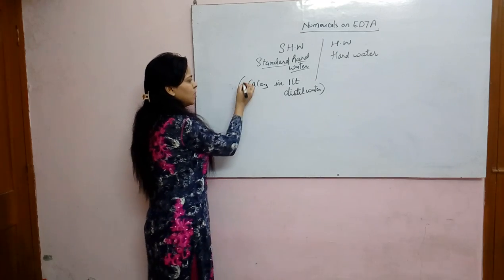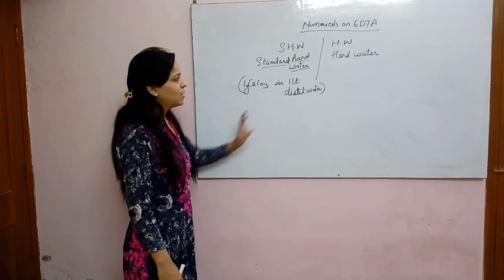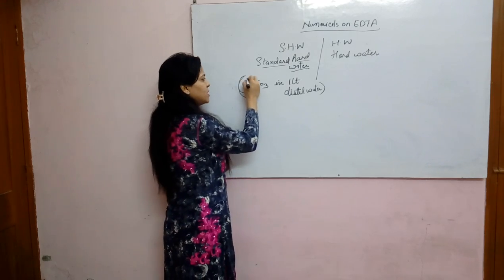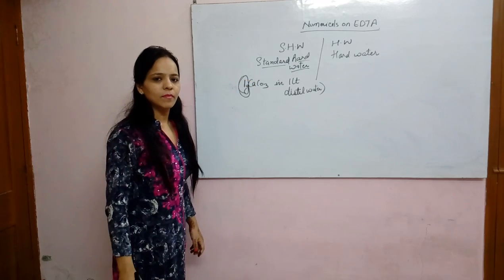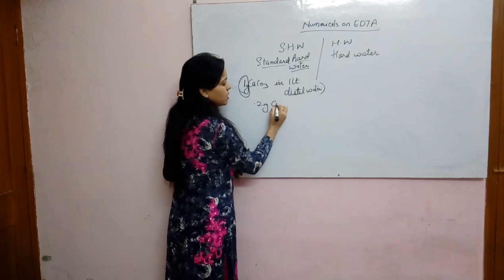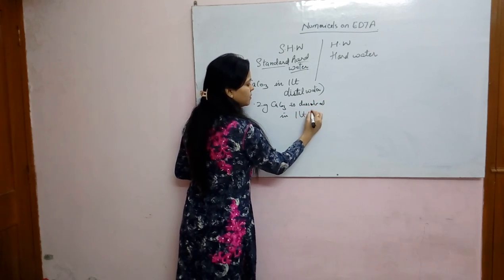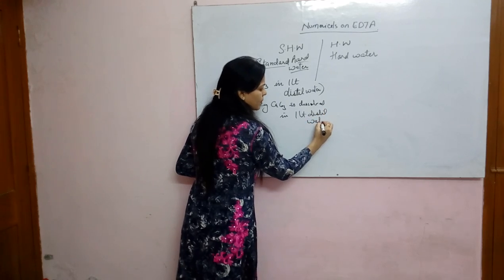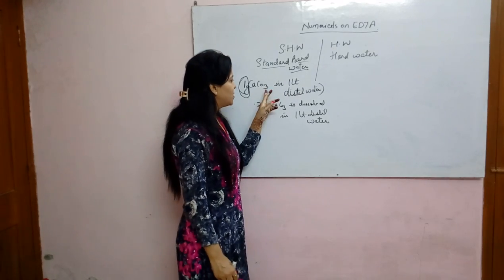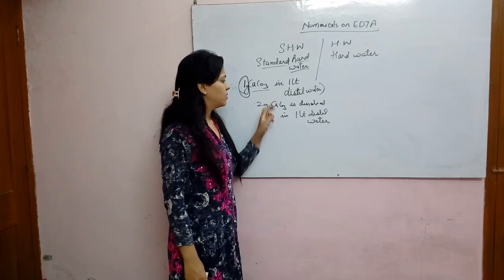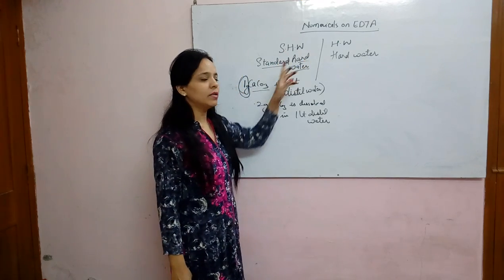The amount of CaCO3 dissolved can vary — for example, 1 gram CaCO3 dissolved in 1 litre distilled water, or it could be 0.2 gram CaCO3 dissolved in 1 litre distilled water. Now, since CaCO3 is insoluble in water, how can we prepare standard hard water by dissolving it in distilled water?